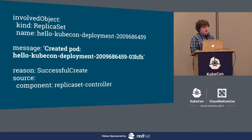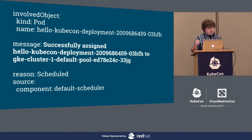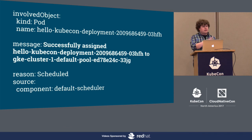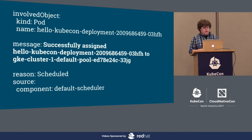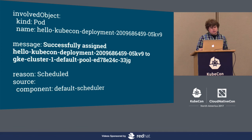Interestingly, both the second and third pods end up scheduled to the same node — 33JG. Selector spread priority tries to spread pods across nodes, but because all ranking functions are weighted and added together, other factors outweighed it and this node was scored high enough to win for all three pods. This is a very tiny Hello World app, so it's not a problem. The replica set controller creates the third pod and the scheduler assigns it to the same node.